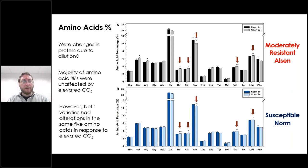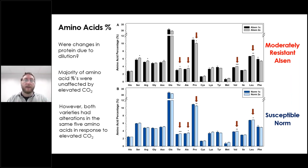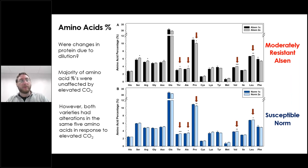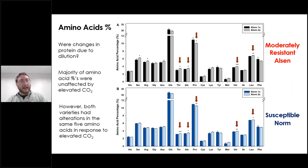We wanted to determine whether this protein decrease was due to dilution from increased carbohydrates, or significant metabolic change during seed fill. We looked at the overall ratio of amino acids by percentage. A majority of amino acids were unaffected by elevated CO2, indicating the primary impact and loss of protein was due to additional carbohydrates during grain fill. However, both varieties had changes in the same five amino acids: threonine, alanine, proline, valine, and leucine, suggesting some significant metabolic changes are occurring.